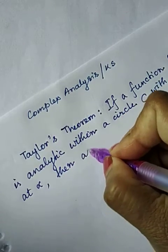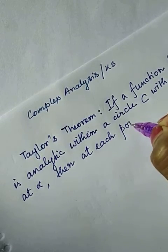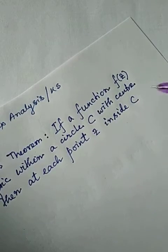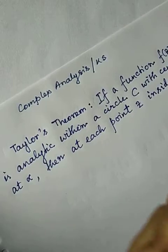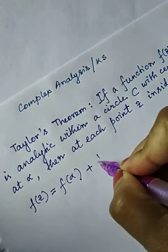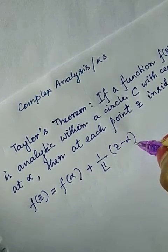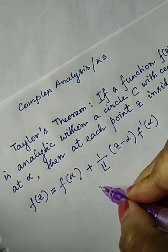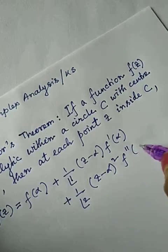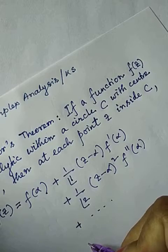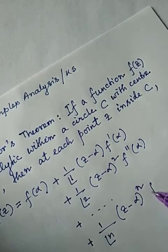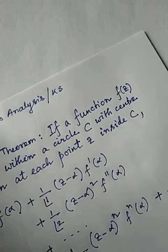...at each point Z inside C, F(Z) can be expanded as: F(Z) = F(alpha) + (1/1!) (Z − alpha) F'(alpha) + (1/2!) (Z − alpha)² F''(alpha) + ... + (1/n!) (Z − alpha)^n F^n(alpha) + ... up to infinity.